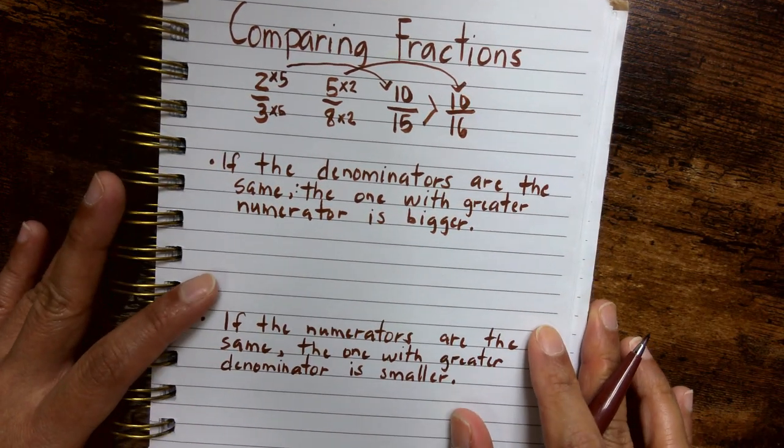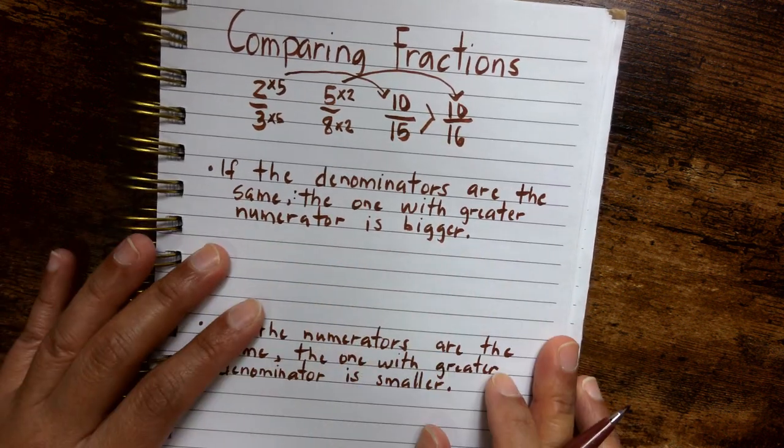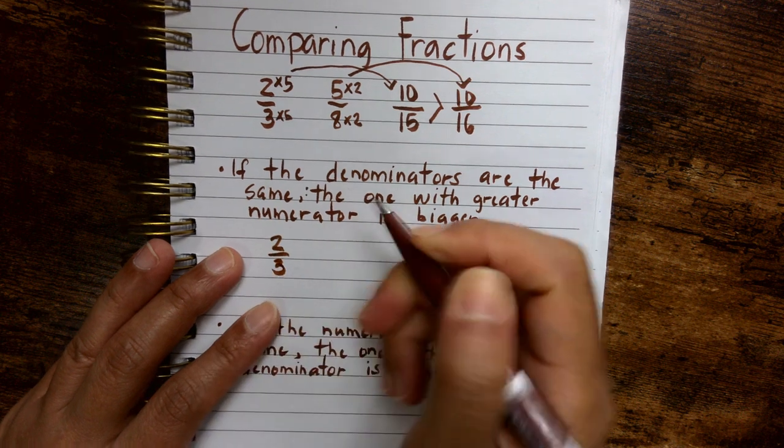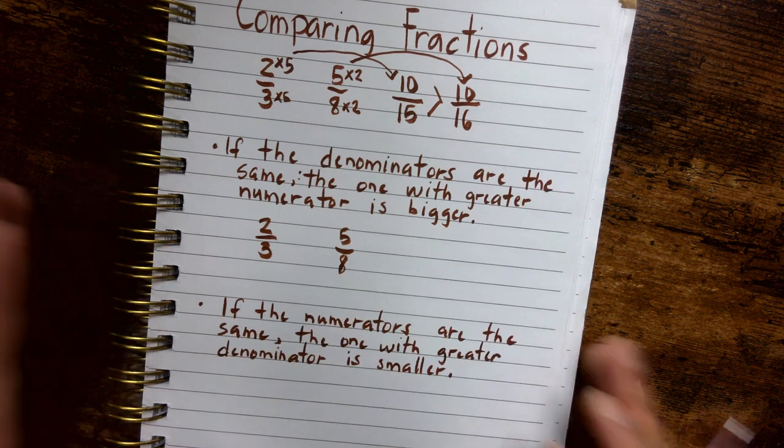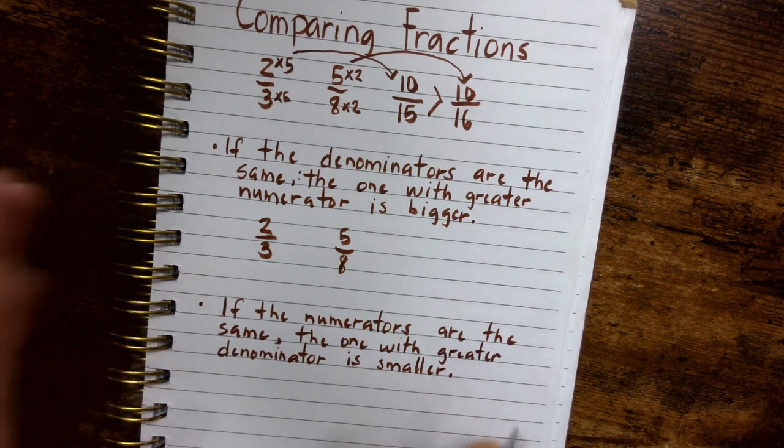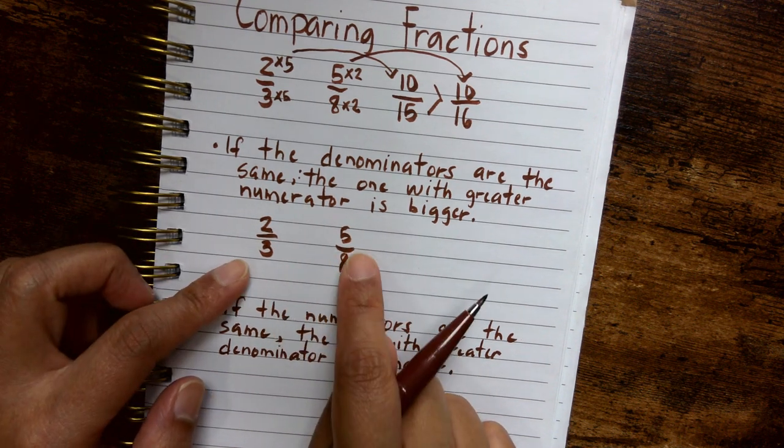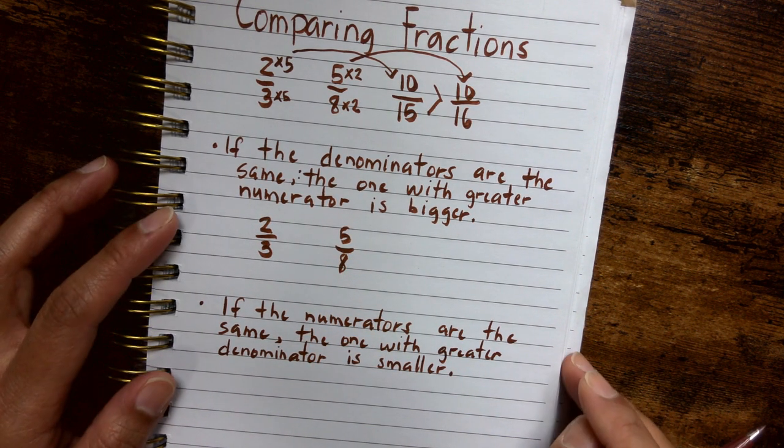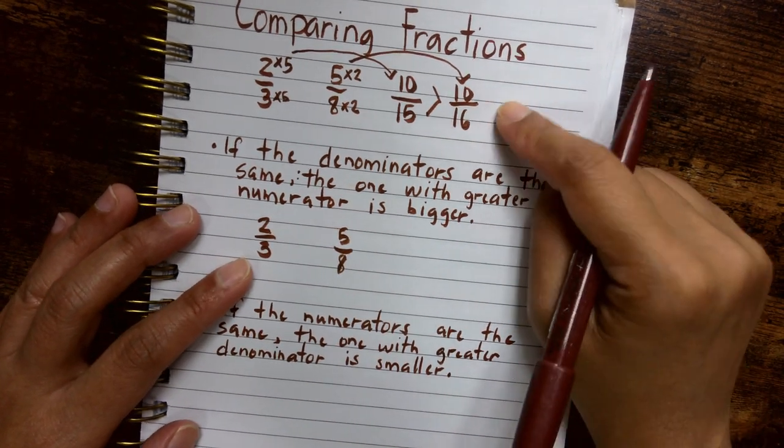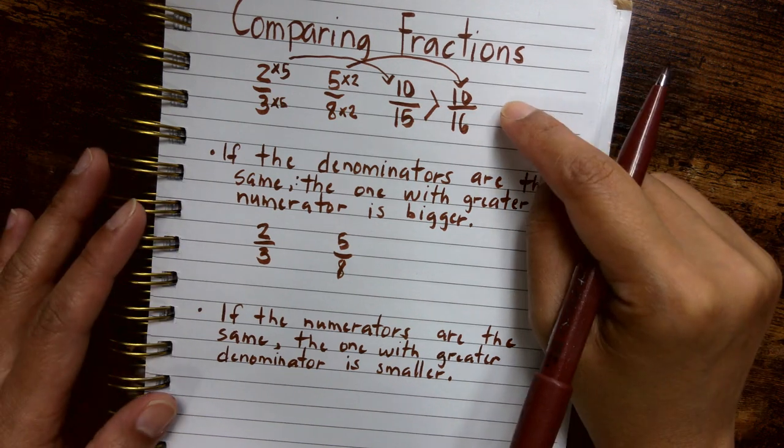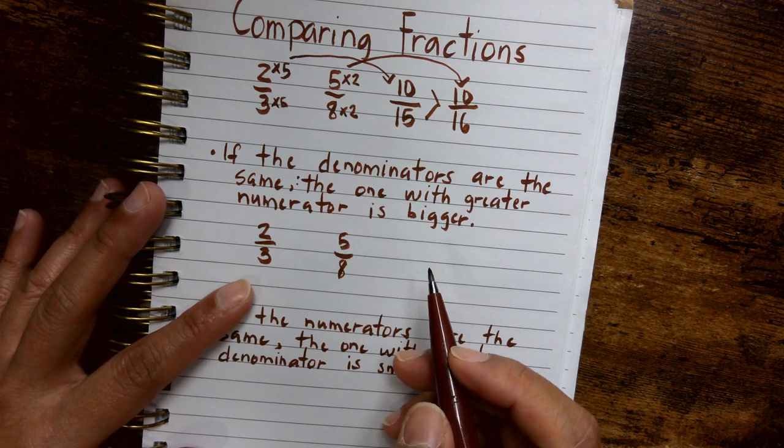So now, what if I want to use the strategy of making the denominators the same? So I'm going to write it here. Two thirds, comparing it to five eighths. Let's say I'm more comfortable changing the denominators so that they are the same. So what we're doing here is we're not really doing anything extraordinary other than expressing two thirds and five eighths into their equivalent fractions so that they have something obviously in common. And with the first strategy, we made sure that what they have in common is the numerator so it's easier to compare. In this case, we're going to try to make the denominators the same.